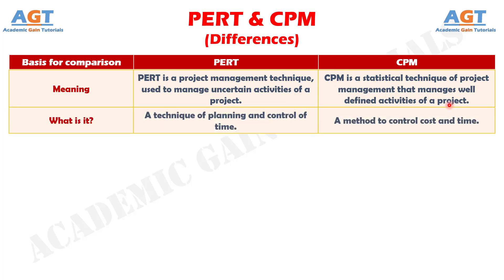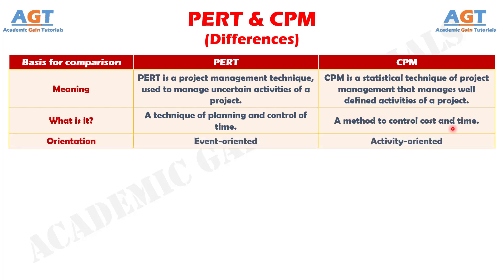Number 2: PERT is a technique of planning and control of time, unlike CPM, which is a method to control costs and time. Number 3: PERT is set according to events, while CPM is aligned towards activities.